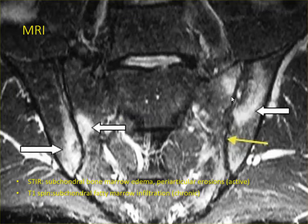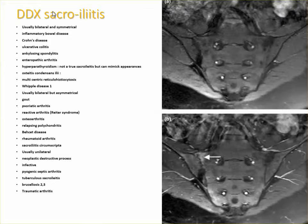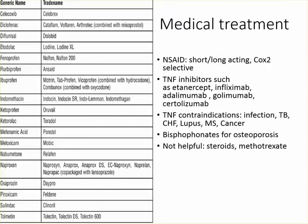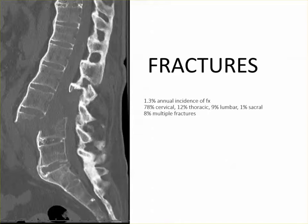An MRI of the sacroiliac joint can give you a diagnosis. There is a differential for sacroiliitis — many things can cause it. The treatment is NSAIDs, and after that, immunological modulators which may be immunosuppressive. Fractures occur in 1% of people per year and they can be very serious.